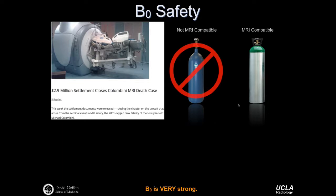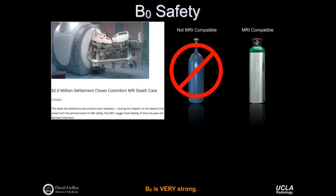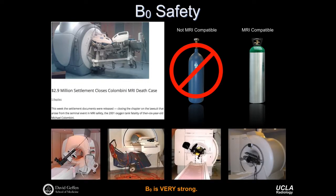Other examples of things people have inadvertently brought in include IV poles, floor buffers, office chairs, and wheelchairs. The field is so strong and picks up so quickly — the gradient in the field is so sharp — that this all happens before someone can undo their relatively severe mistake.